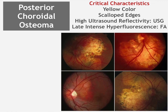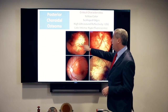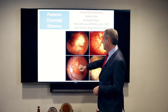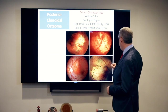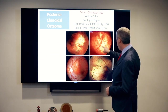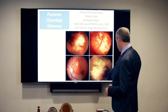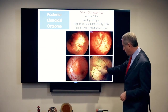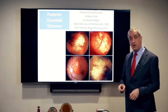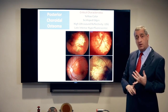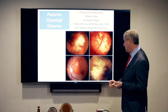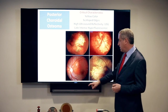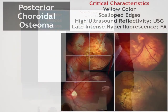Looking at osteoma cases, here we have scalloped edges, some pigment on the surface near the optic nerve. Form vessels are primarily seen with choroidal melanomas and osteomas — here we have form vessels inside the bone. Sometimes they're a little more subtle, but again you see the scalloped edges, and they're relatively flat.